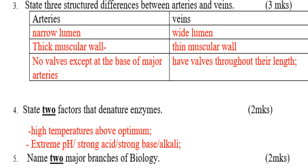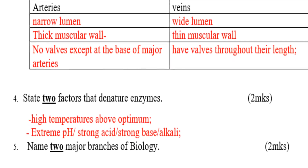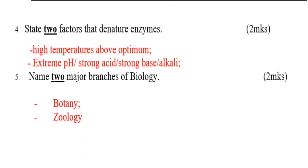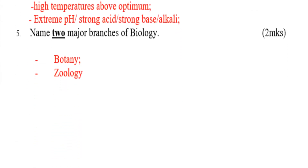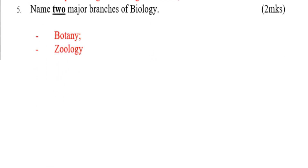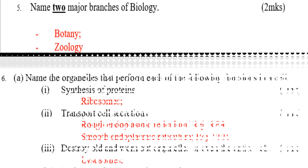Question number five: state two major branches of biology. This is very simple. Number one is botany, and number two is zoology.